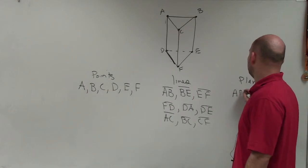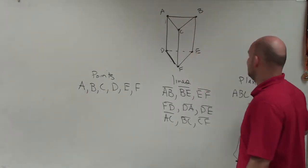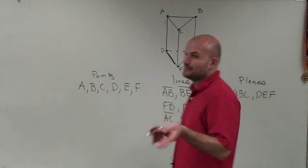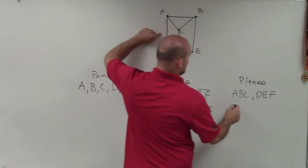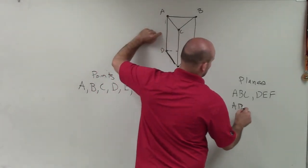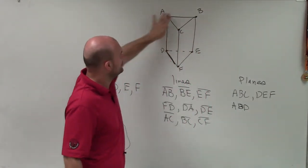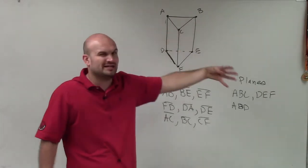So I could say ABC, which would represent the plane that would be like the top side. I could use the plane DEF, which would be the plane that would kind of represent like the bottom side. I could represent the back, which would be ABD. Right? So ABD, or I could use ABE. You could label it any other multiple ways you want to, but we only need three points.